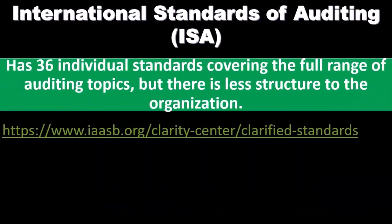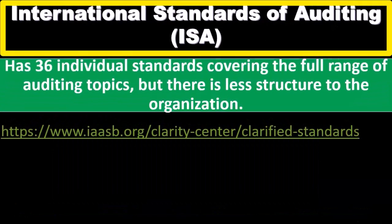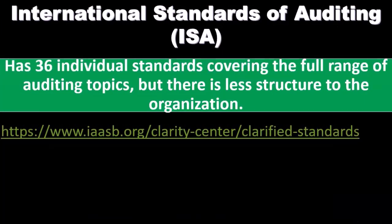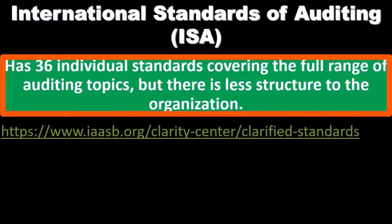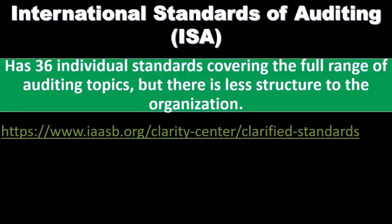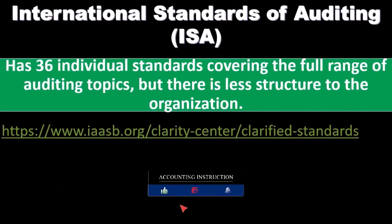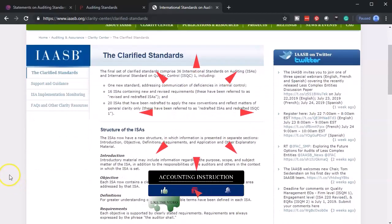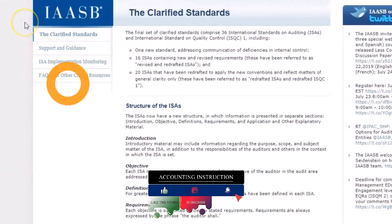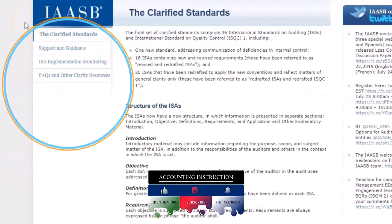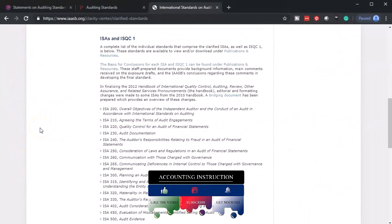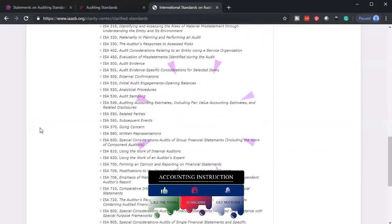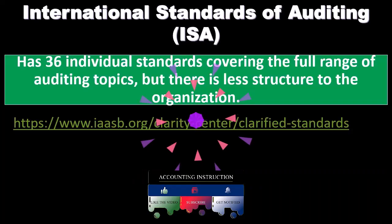We then have the International Standards on Auditing, the ISA. It has 36 individual standards covering the full range of auditing topics, but there is less structure to the organization compared to the other types of standards. You can find them at the provided URL. Here we are at the IAASB website, and if we take a look at the standards we can scroll through and get a feel for them as well.